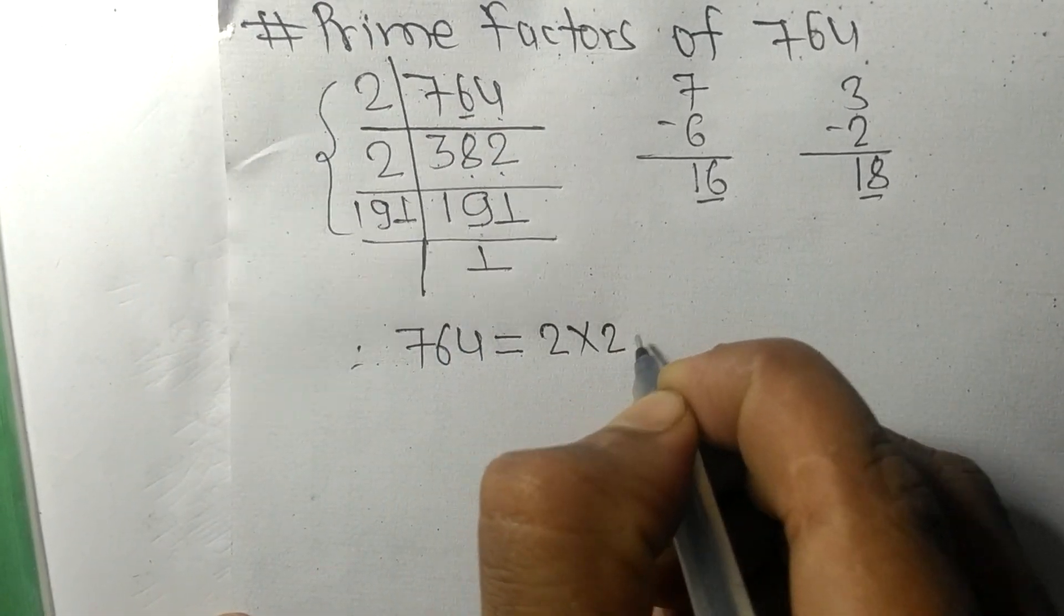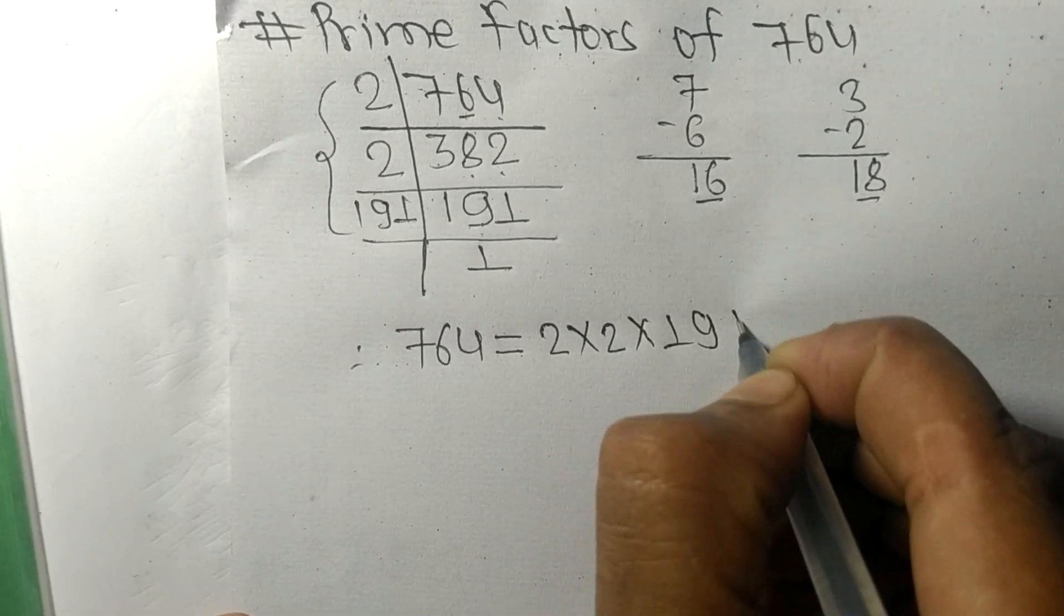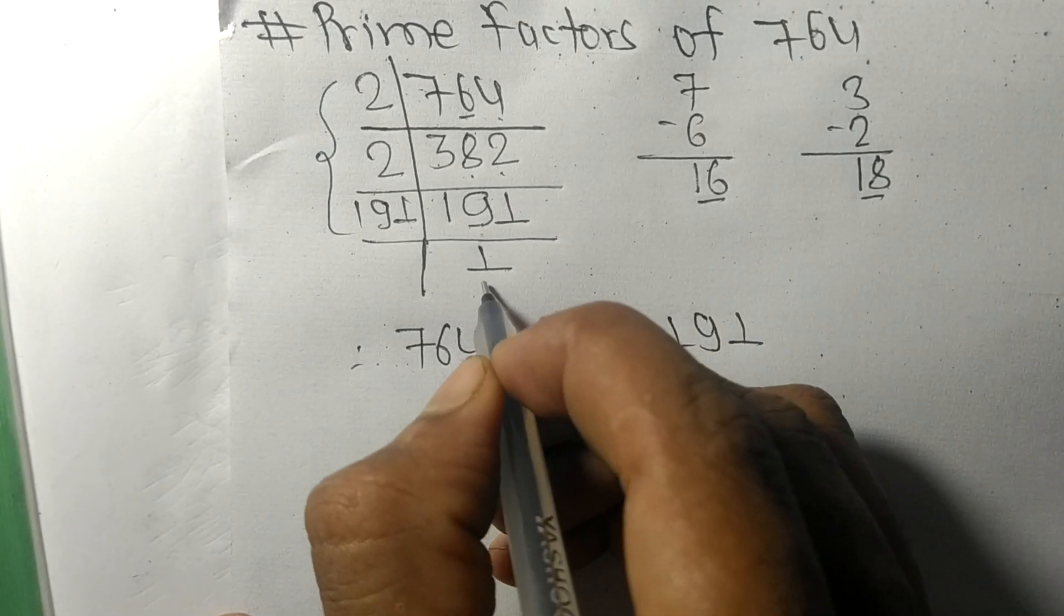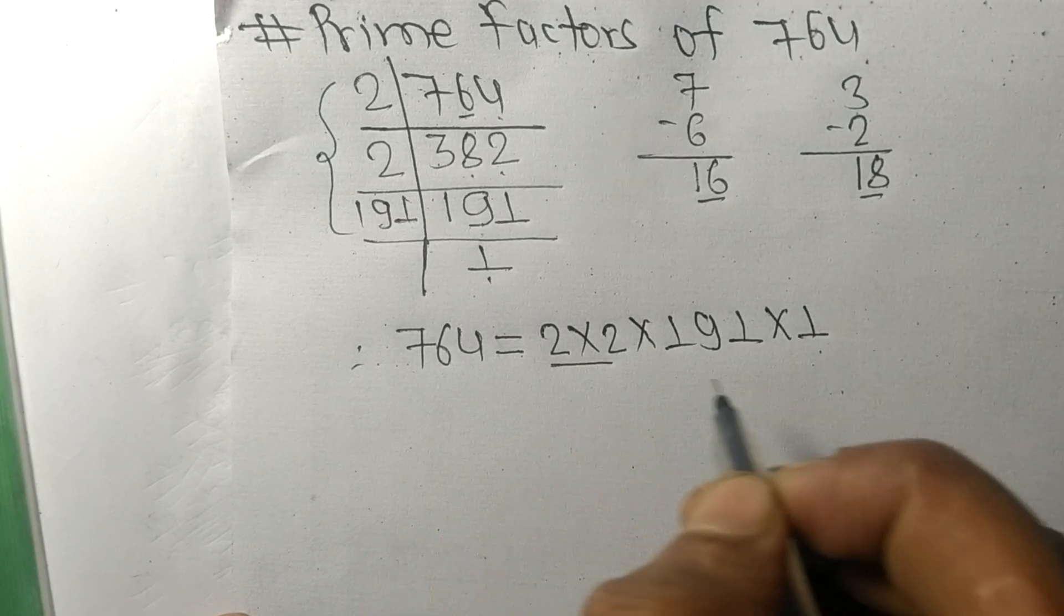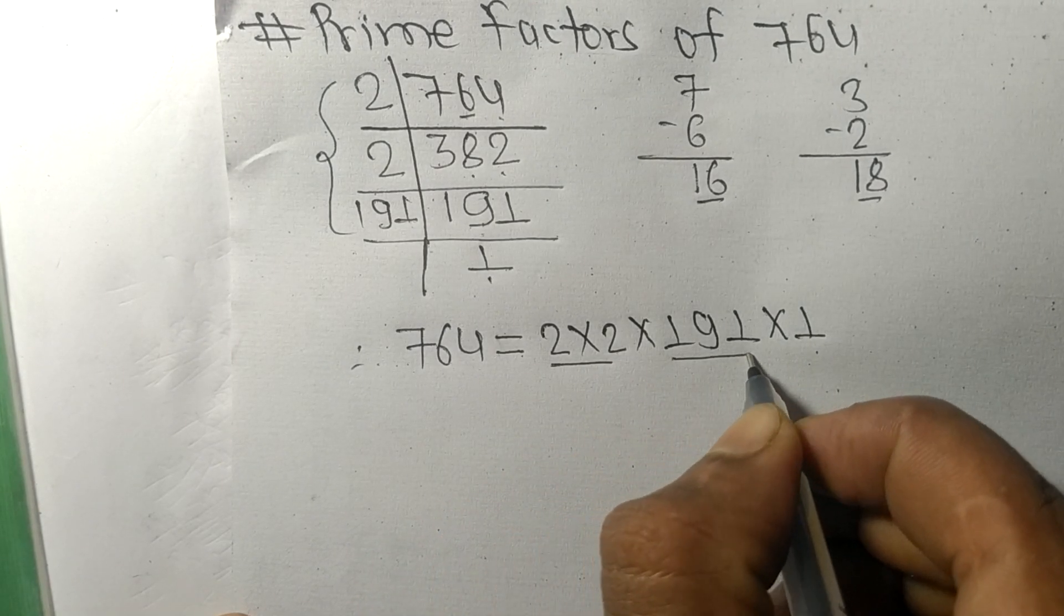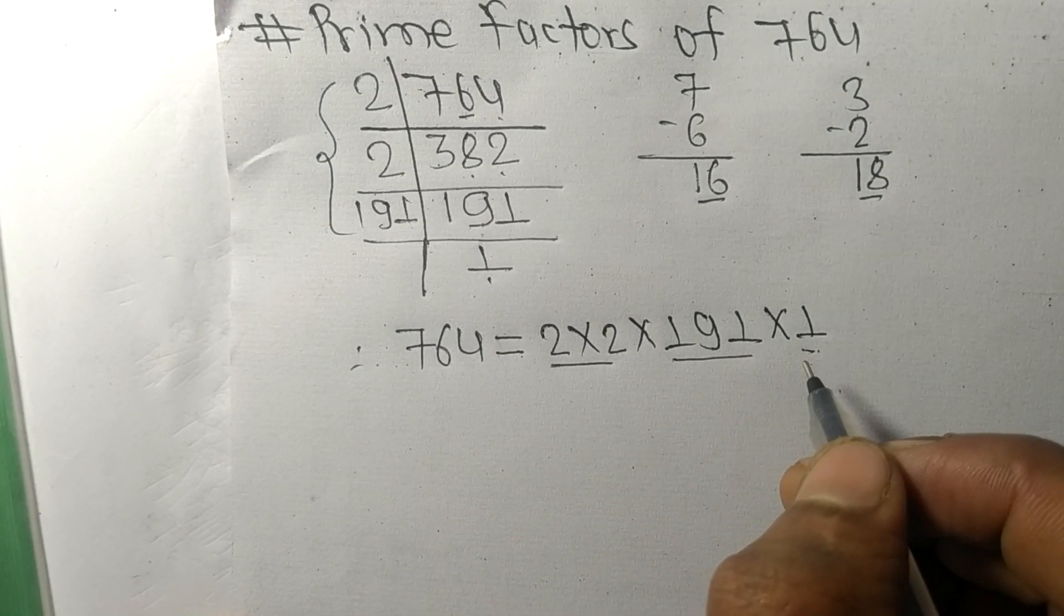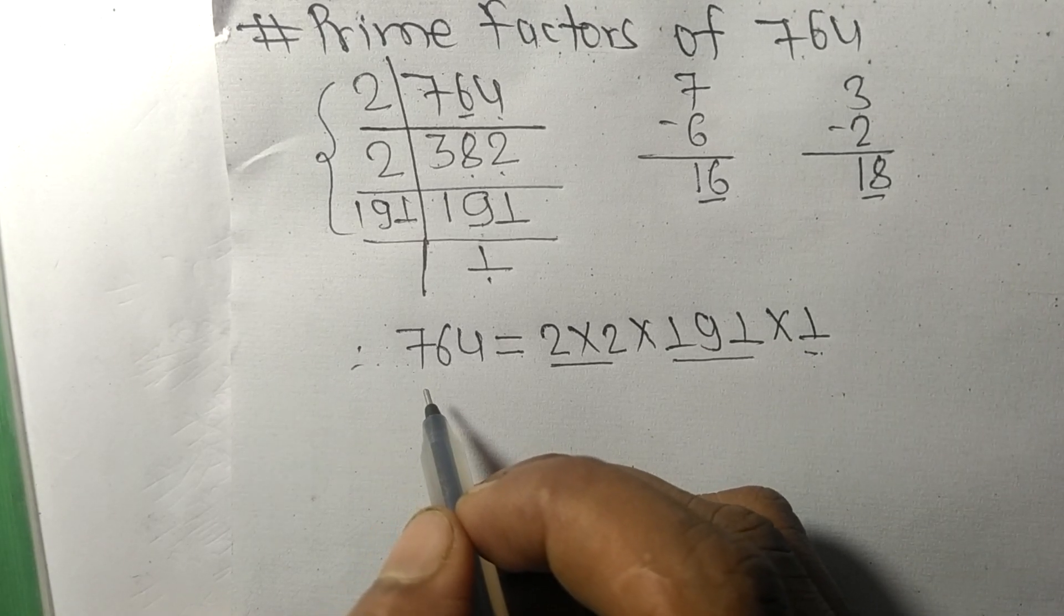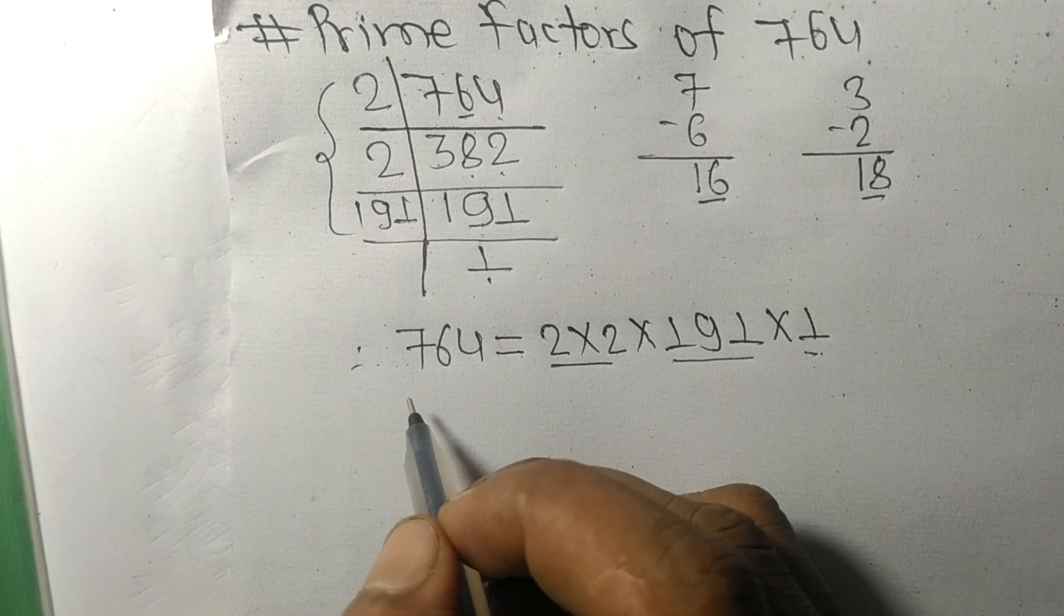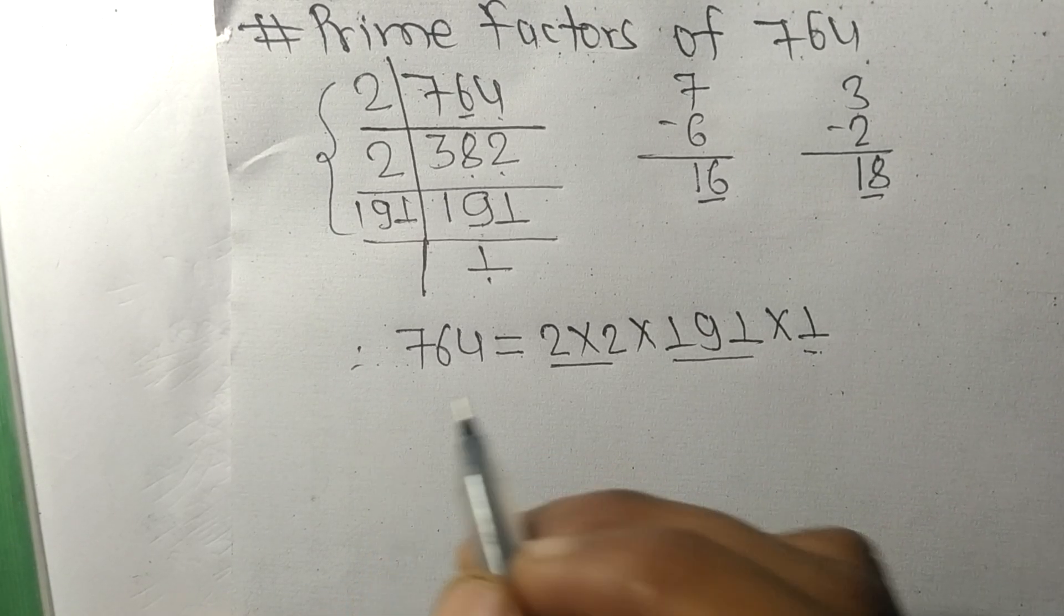It is 2 times 2 times 191. So 2, 191, and 1 are the prime factors of 764. This much for today, and thanks for watching.